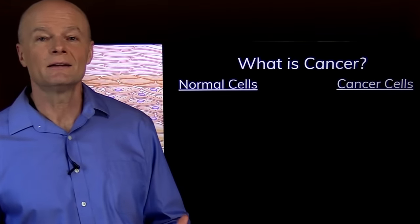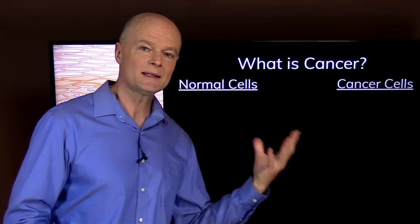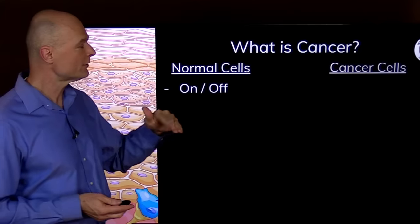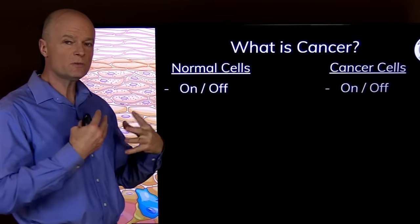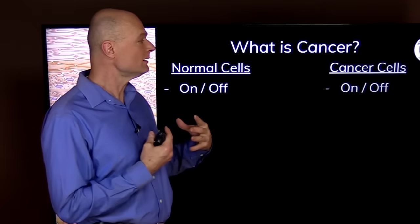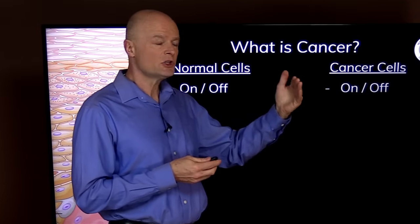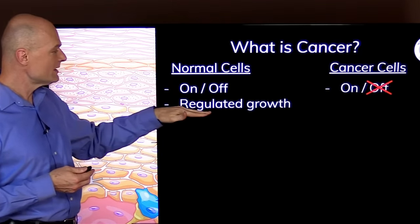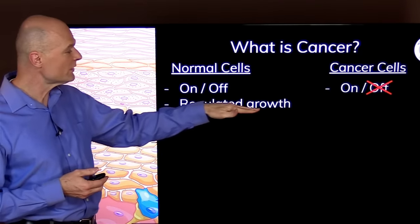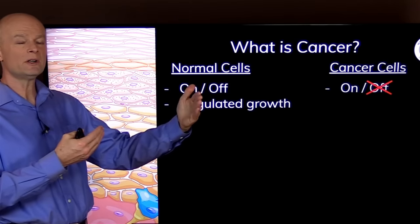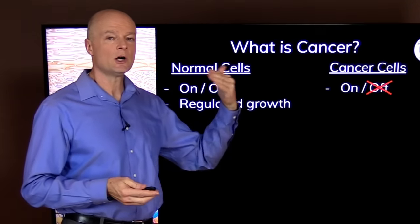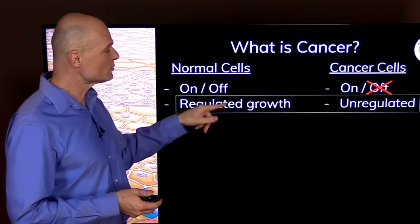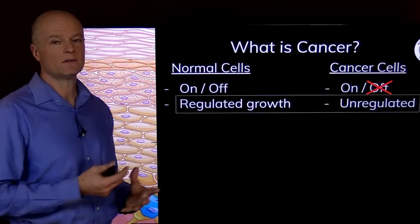Now let's try to understand a little bit about what cancer is and how these cells are different from normal cells. A normal cell can turn on and it can turn off. A cancer cell is a cell that used to be a normal cell. It's still your cell, but something changed so it lost the ability to turn off. A normal cell is called a regulated cell. The growth is regulated. It can grow and develop to a point and then stop. But a cancer cell has lost that ability. It's called unregulated growth.